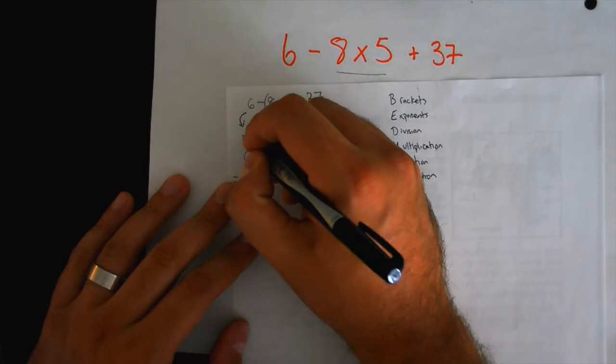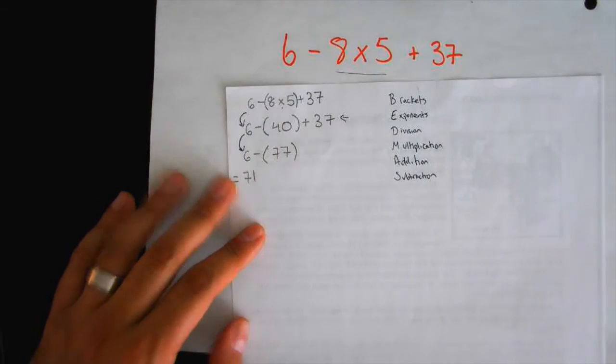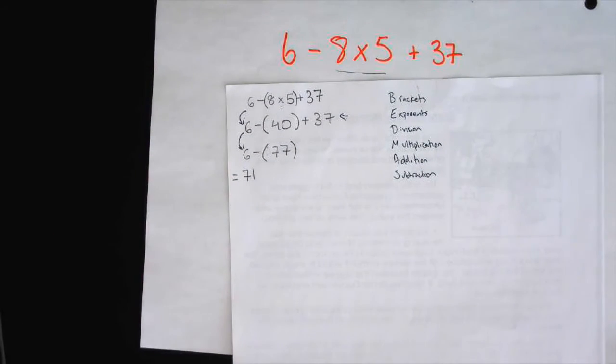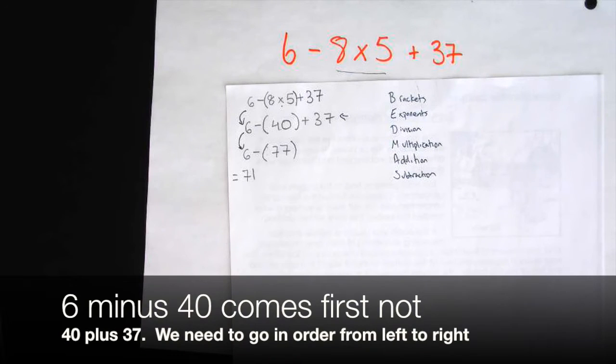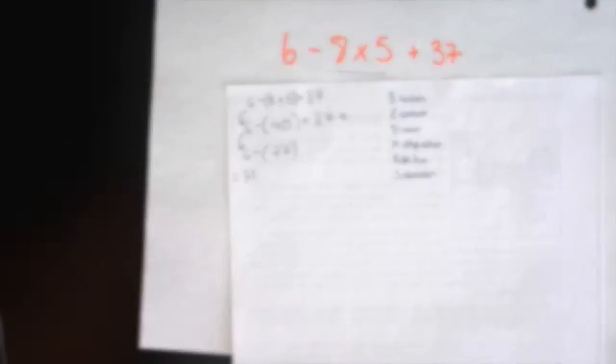Now, from here to here, is that step correct, what they did? I don't think so because they did 40 plus 37, but if you look at the equation, then 6 minus 40 comes first. So you said 6 minus 40 comes first. Who wants to share what they did to solve this equation?